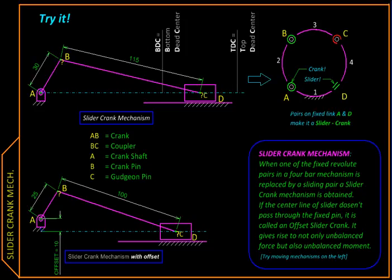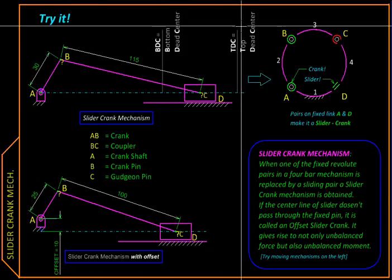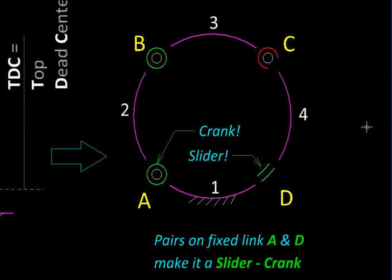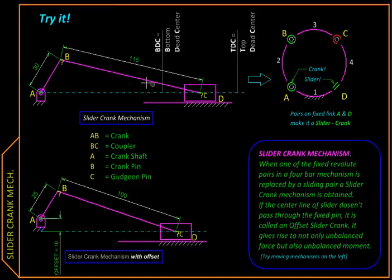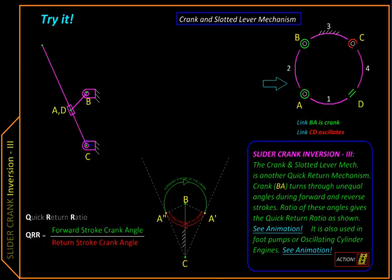If we start with a basic slider crank, which can be schematically represented like this, it has a crank over here and on the other side it has a slider. If we fix link number three, which is this coupler over here, then we get the third inversion of slider crank like this.